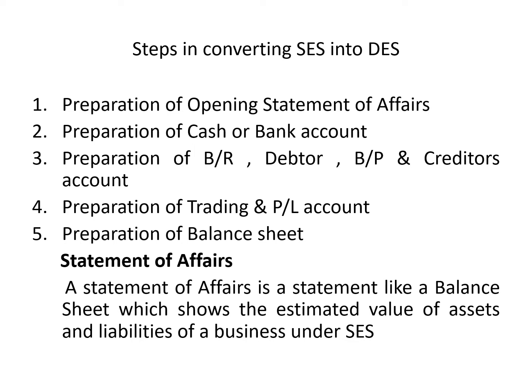The following are the steps involved in converting single-entry into double-entry system. Step 1 is preparation of opening statement of affairs. Step 2 is preparation of cash or bank account according to the balance given in the question. Step 3 is preparation of BR, debtors, BP and creditors account. Step 4 is preparation of trading and P&L account. The last step is preparation of the balance sheet.